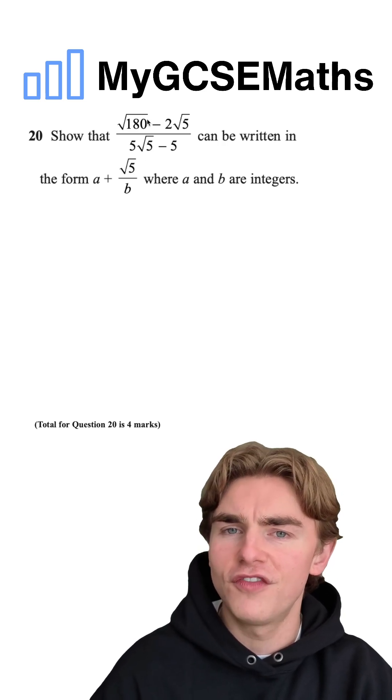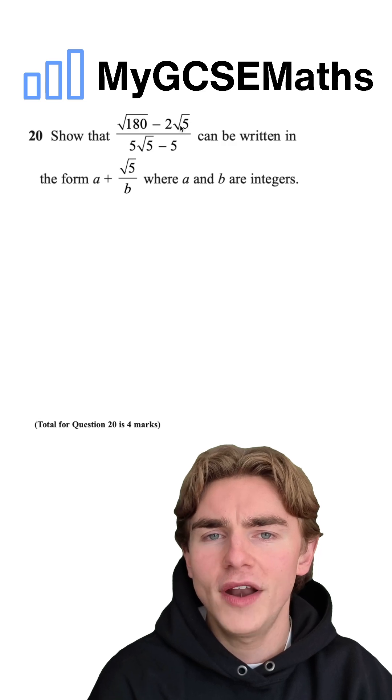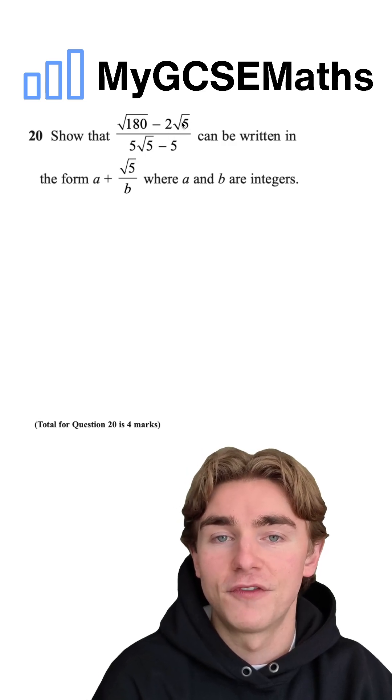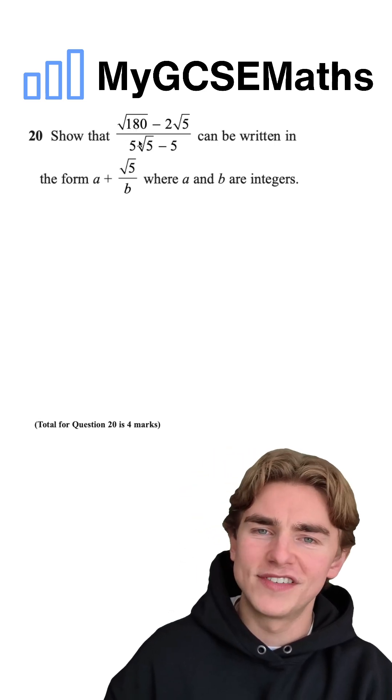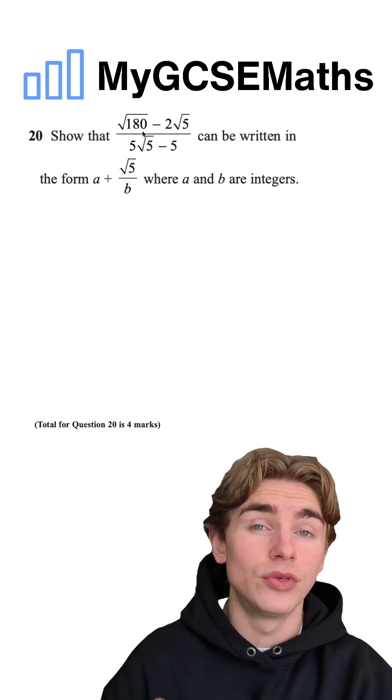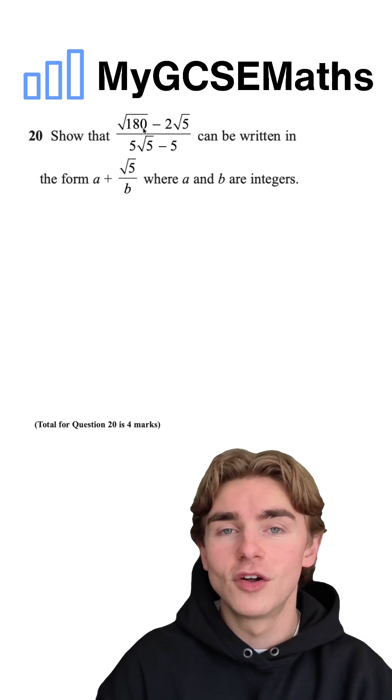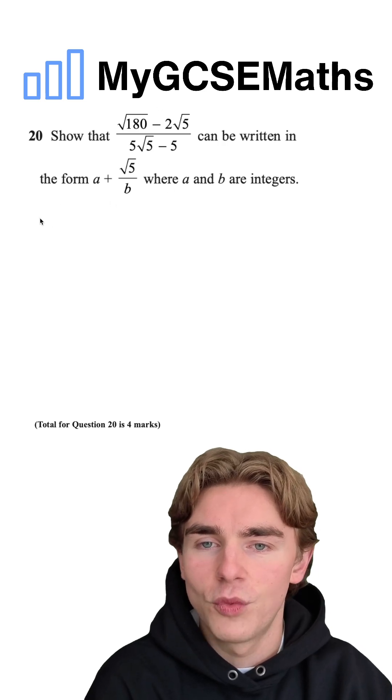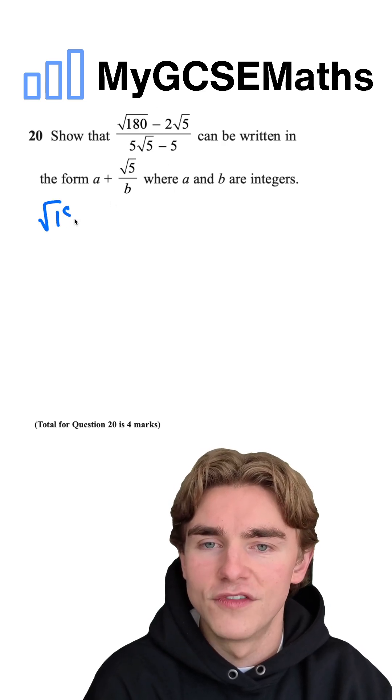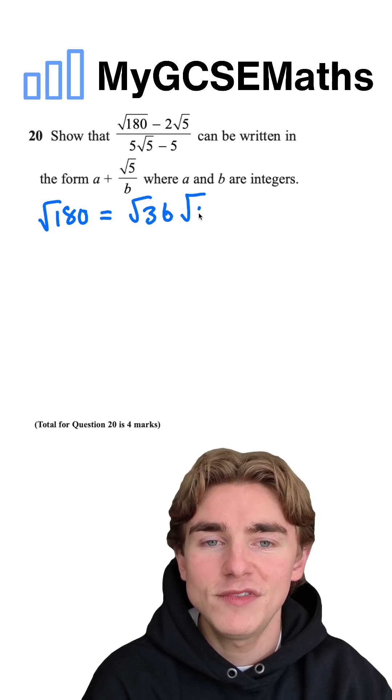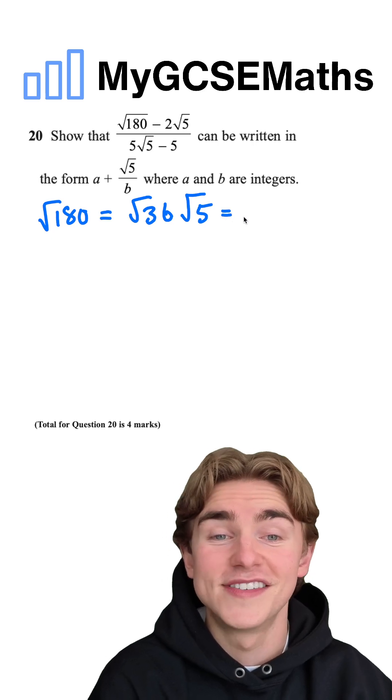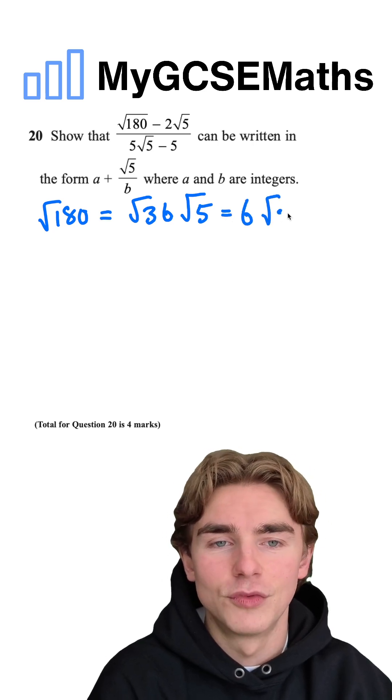How do we do it? Well, first off, we're going to recognize that we have quite a few root 5s in this fraction, and we have this root 180 here. Now, can we simplify this? 180 is actually equal to 36 times by 5. So we can start off by writing the square root of 180 as being equal to the square root of 36 times by the square root of 5. The square root of 36 is 6. So we have 6 root 5 here.